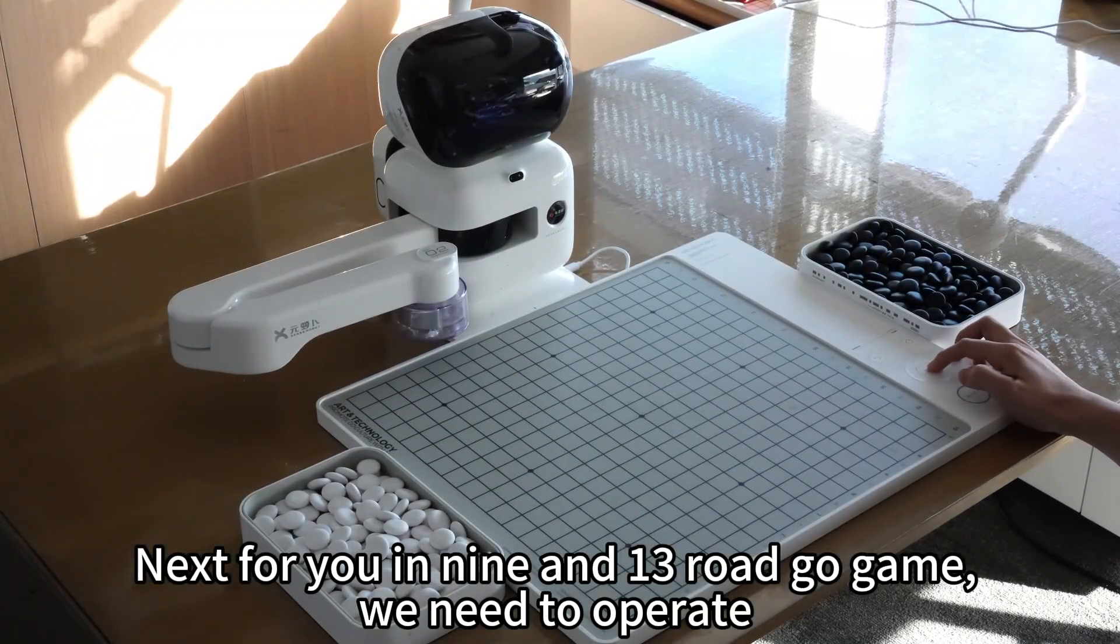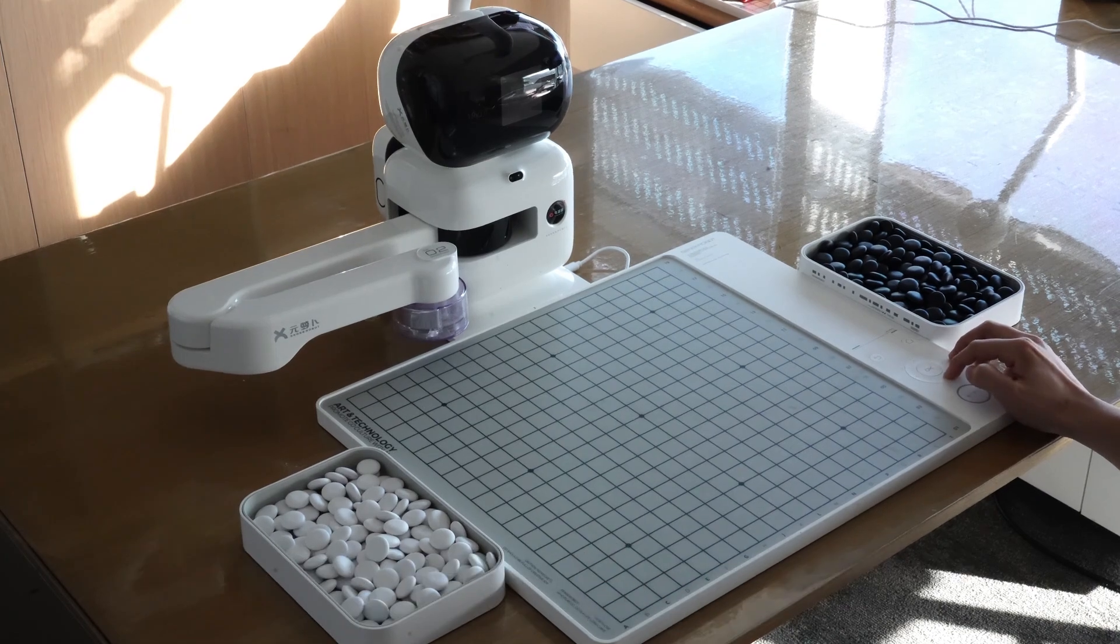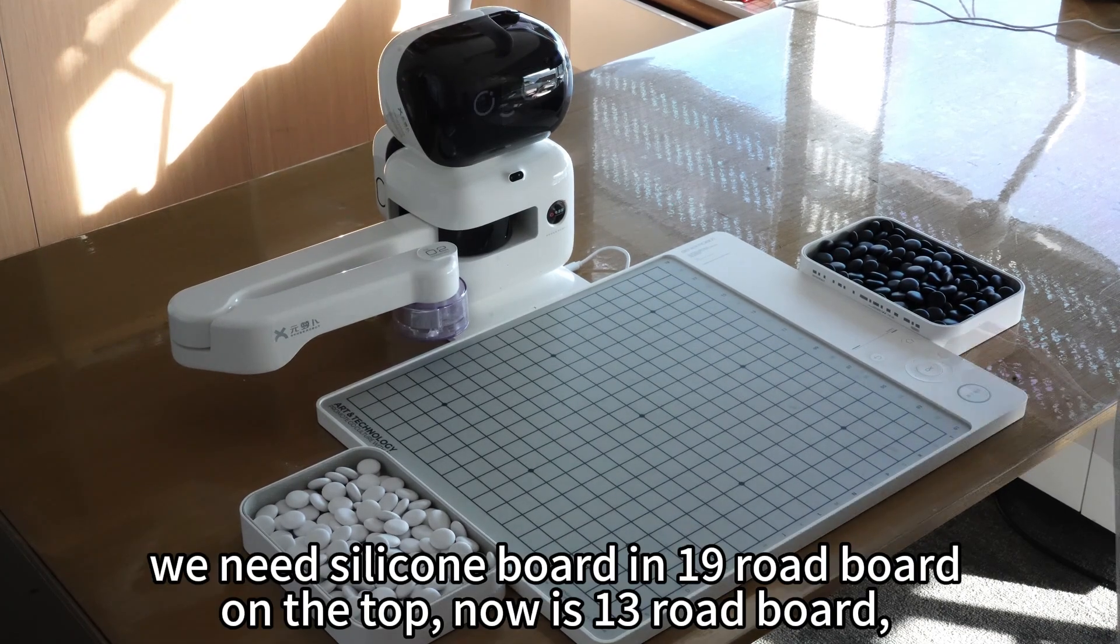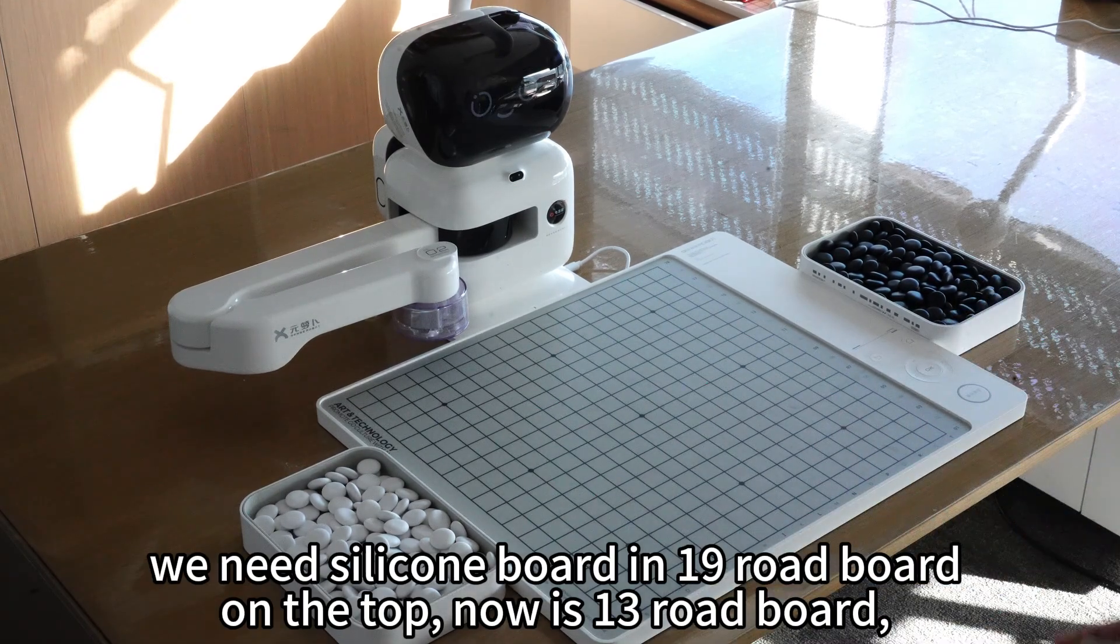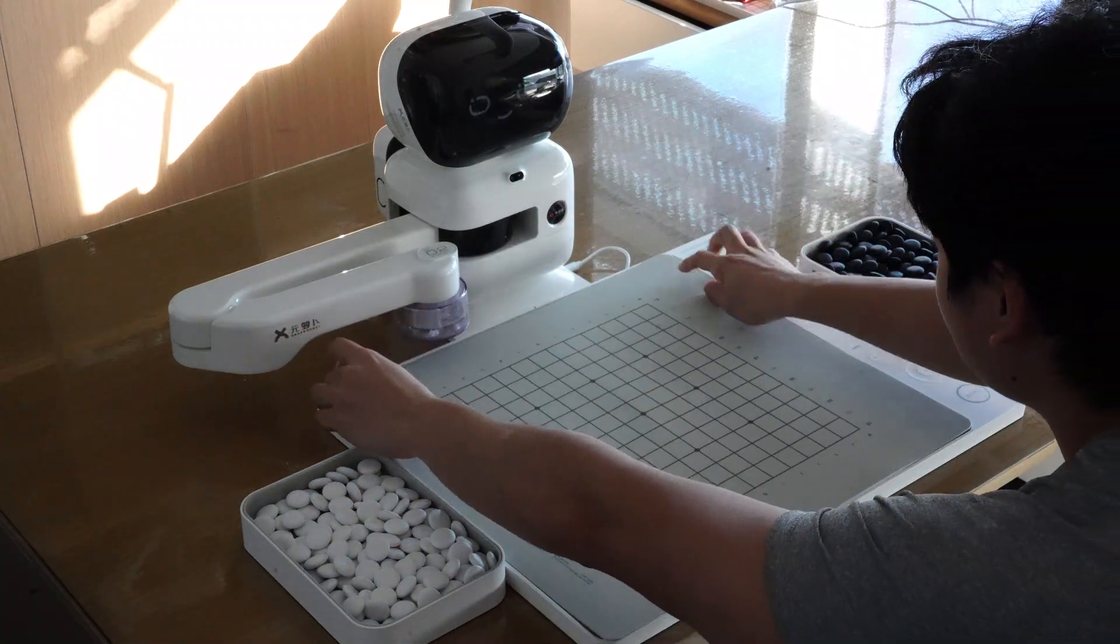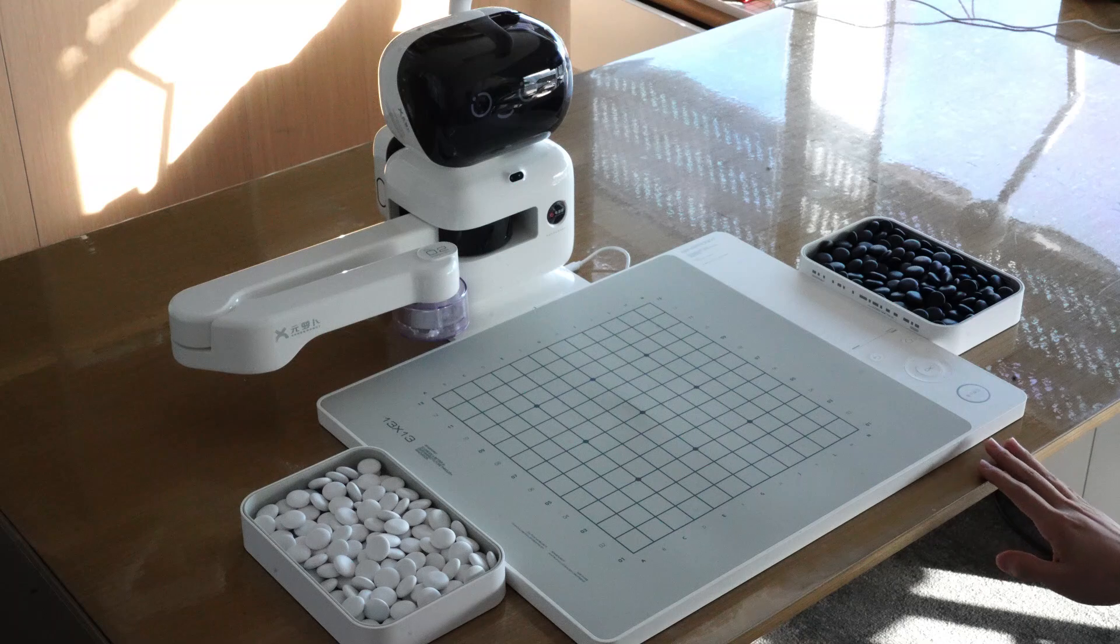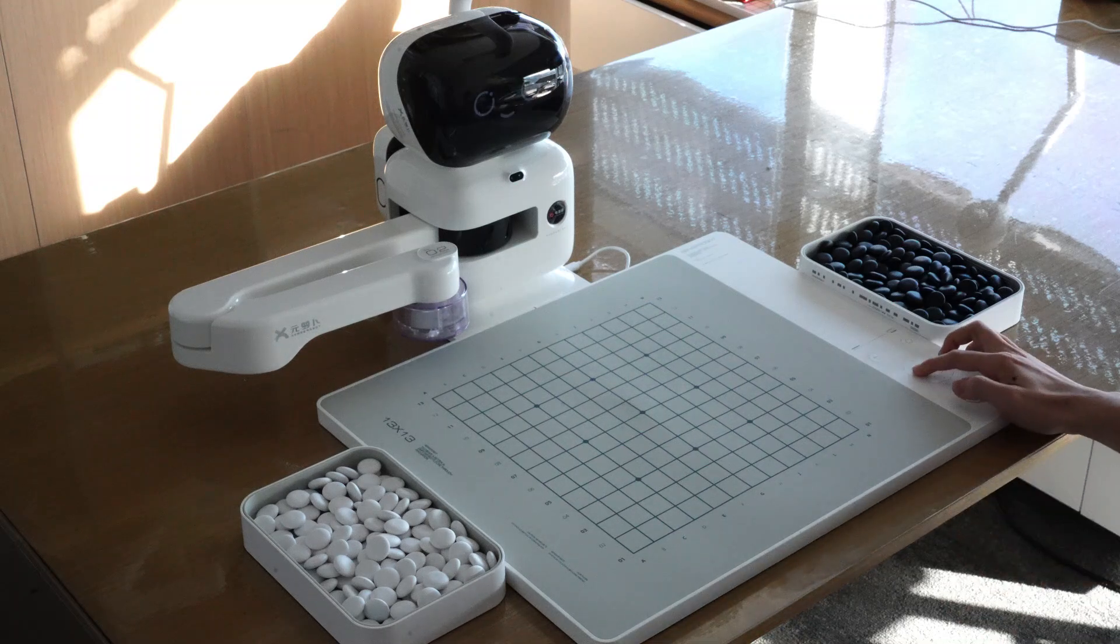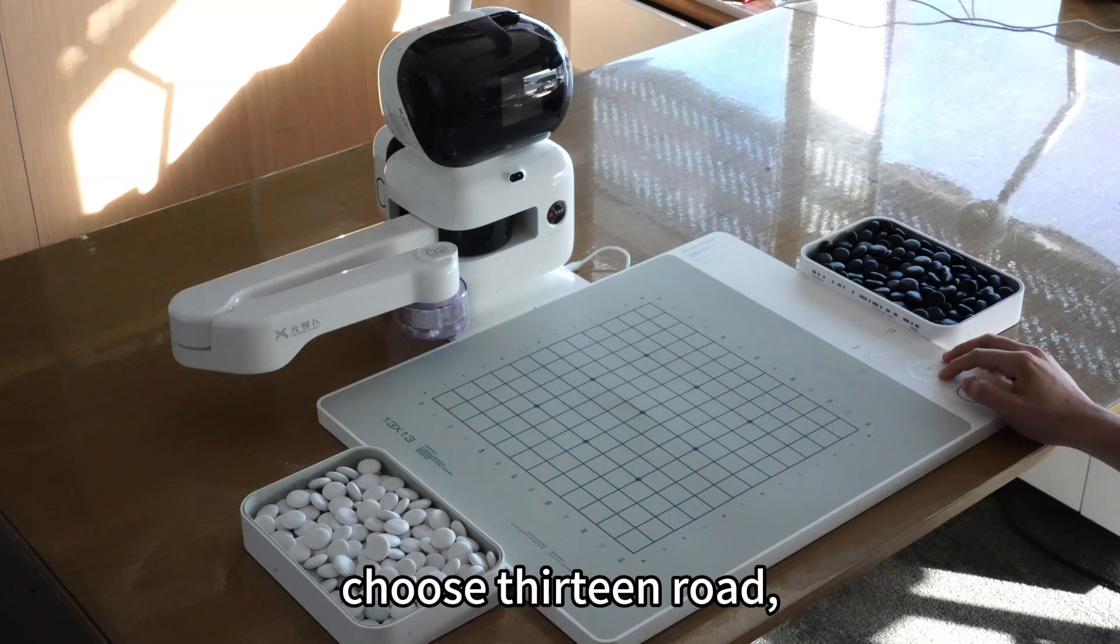Next, for 9x9 and the 13-row Go game, we need to operate. We need the silicone board in the 9 or 13-row board on the top. Now it's the 13-row board. Choose the 13-row.